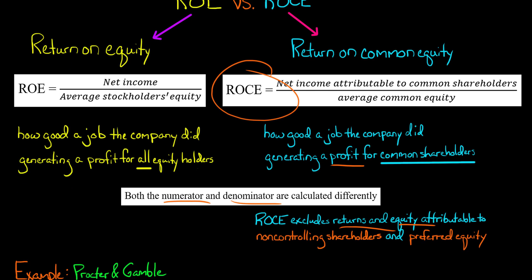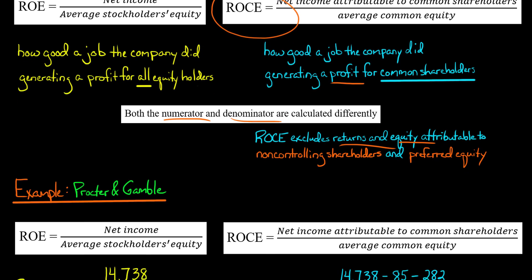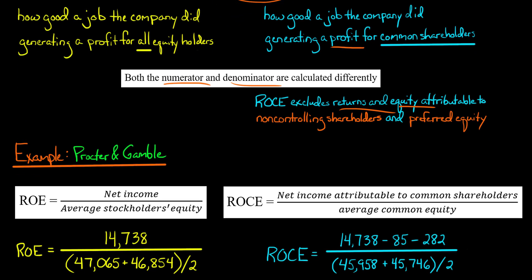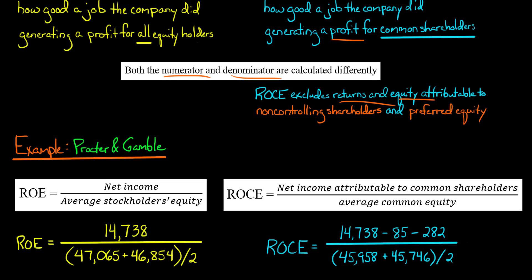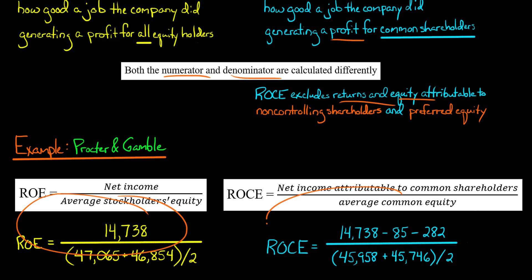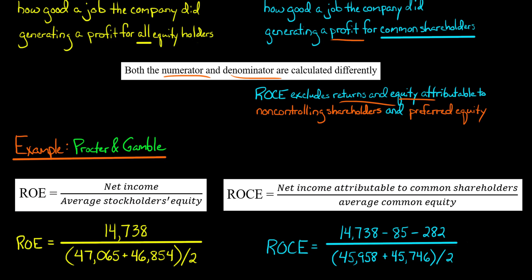So let's do an example with an actual company. We're going to take the company Procter & Gamble. I've looked up their financials from their 10-K, and we're going to do some calculations to get their return on equity and their return on common equity. I've got the formulas here for each one, and I've written out the numbers, but I want to show you where I got these numbers from.